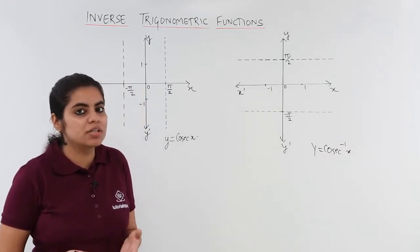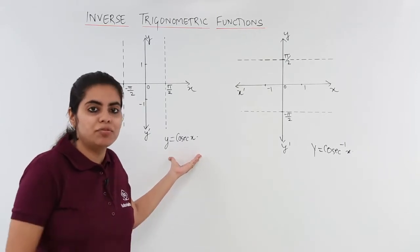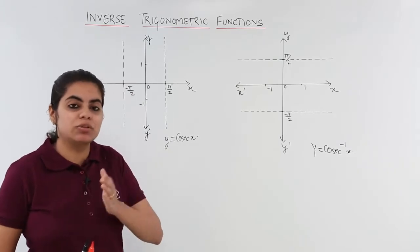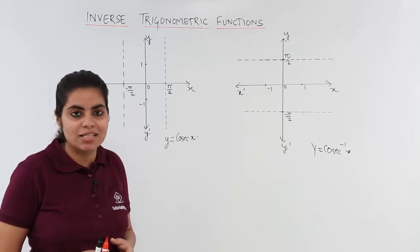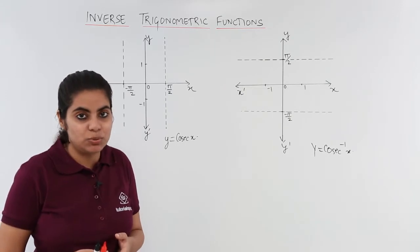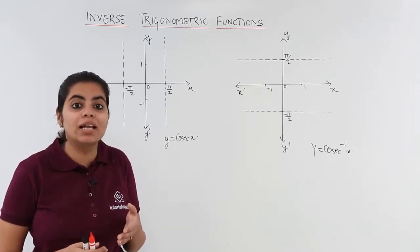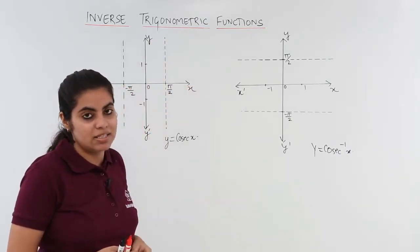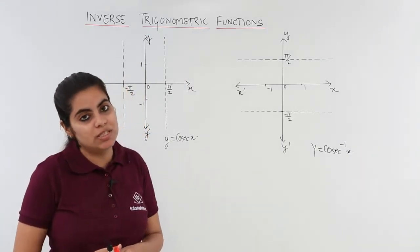The steps are very simple. First, we draw the simple original graph of the trigonometric function. Then three steps to follow: interchange the x-axis with the y-axis; the second step is interchange the y-axis with the x-axis; and the third is take the reflection about the line y is equal to x, which is a line at 45 degrees to the coordinate axes.